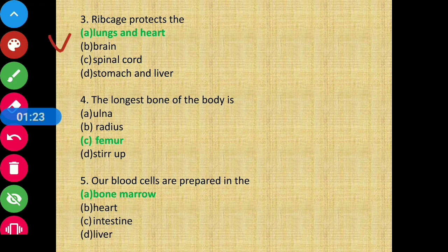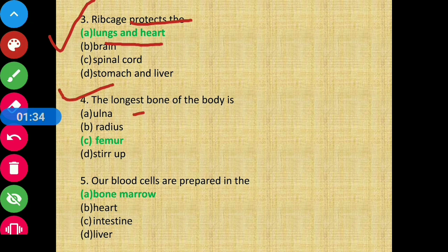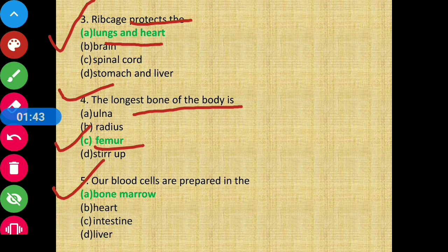Question number 3: rib cage protects the — rib cage protects lungs and heart. Question number 4: the longest bone of the body is — option C, femur. Question number 5: our blood cells are prepared in — blood cells are prepared where? Option A, bone marrow is the correct answer.